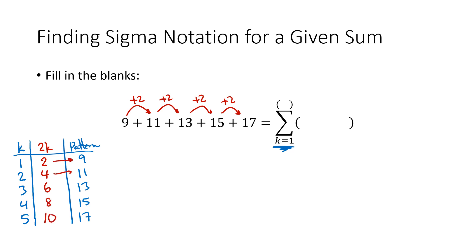But that doesn't quite give me the exact right numbers that I want. So what do I have to do to those numbers to get the actual pattern? Again, hopefully you can see there that what I need to do is add 7. So 2k plus 7, that's going to be my formula in my sigma notation.